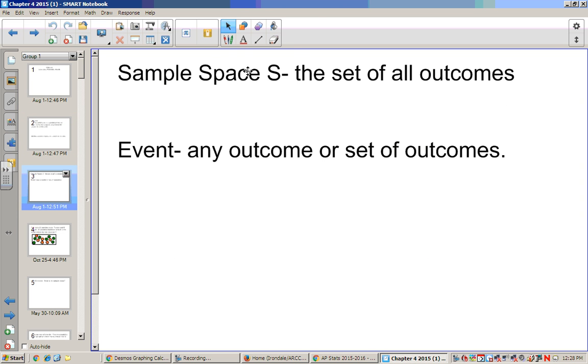One of the big ideas is you have to figure out your sample space, usually denoted with a capital S. This is the set of all outcomes in a particular situation. An event is any outcome or a set of outcomes that's a subset of the whole sample space. We'll do some more examples of this in a little bit that hopefully will make more sense.